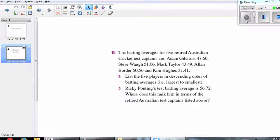Let's move on to a problem-solving question. Question 10 asks us this: The batting averages for five retired Australian cricket test captains are Adam Gilchrist, 47.6, Steve Waugh, 41.06, Mark Taylor, 43.49, Alan Border, 50.56, and Kim Hughes, 37.41. List the five players in descending order of batting averages, from the largest to the smallest.